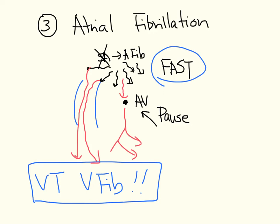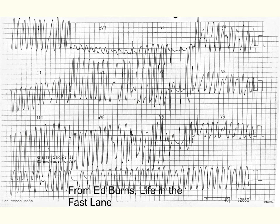This is the most dangerous presentation in patients with Wolff-Parkinson-White syndrome. The ECG would be: fast, irregular, and wide — since the underlying rhythm is AFib (irregular), and many impulses are going down the accessory pathway (wide). This is what an ECG would look like. You can still see a few narrow complexes if some impulses manage to go through the normal pathway.